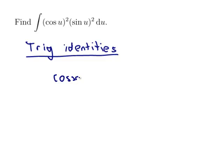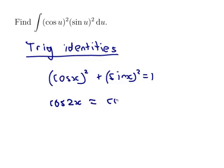Obviously there's cos x squared plus sin x squared equals 1. And the double angle formula for cos has a cos squared and a sin squared. So cos 2x is equal to cos x squared minus sin x squared.